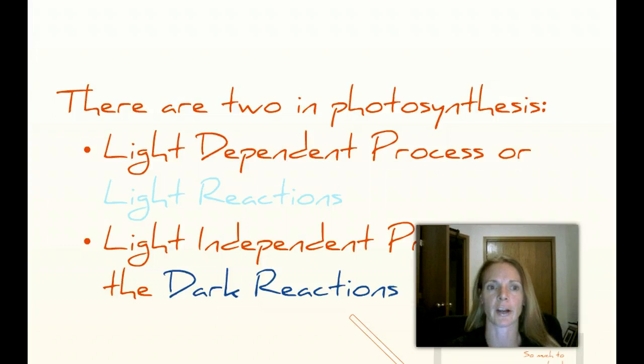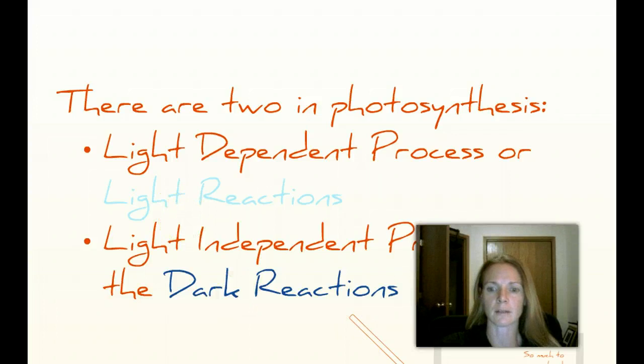So let's go into the stages. There are two in photosynthesis. It does talk about kind of three stages on one of your pages in your lesson. I don't want you to get confused because really there are two main stages that we're going to talk about. The two main stages are the light-dependent process or light reactions, and the second stage is the light-independent process or the dark reactions. That's very clever, right? If it's independent of light, it doesn't need it. It's the dark reactions. If it needs it, it's the light reactions. So pretty simple so far.